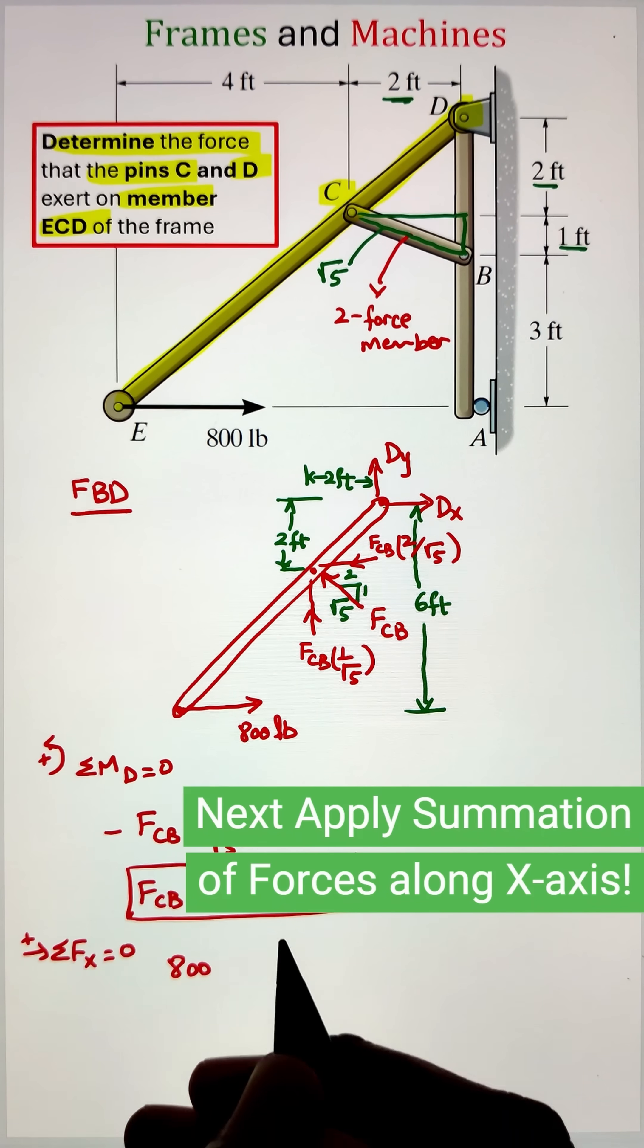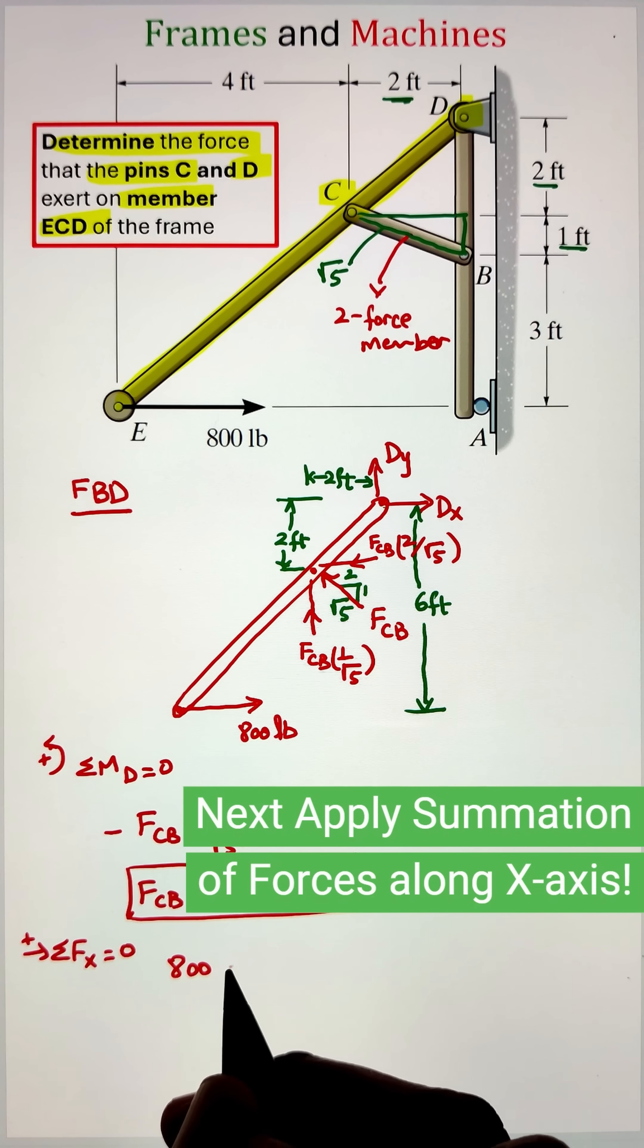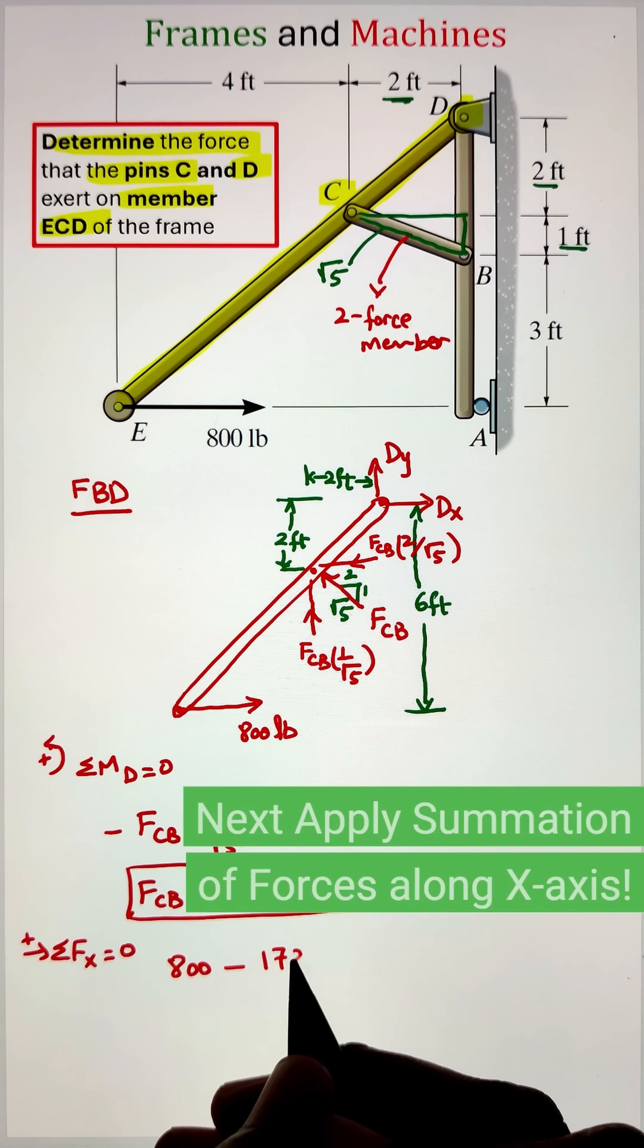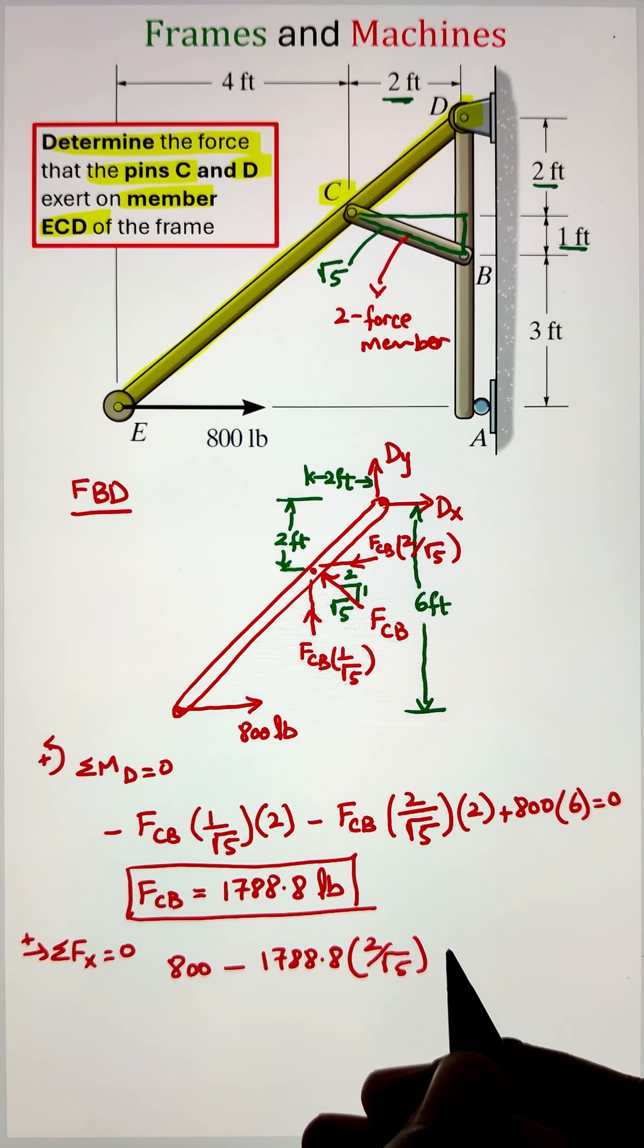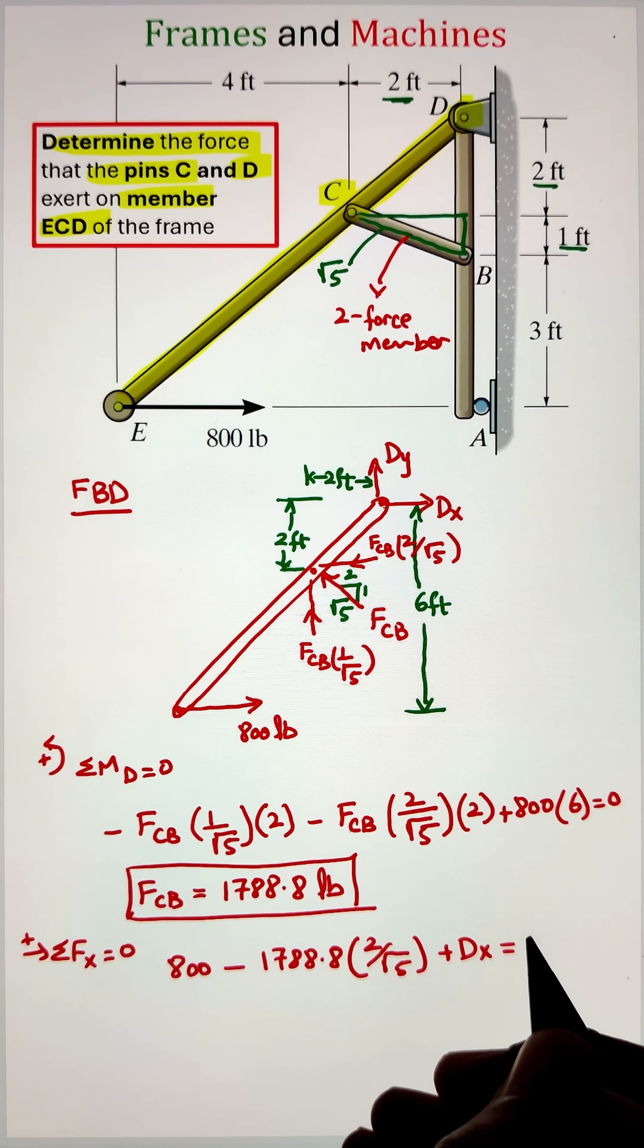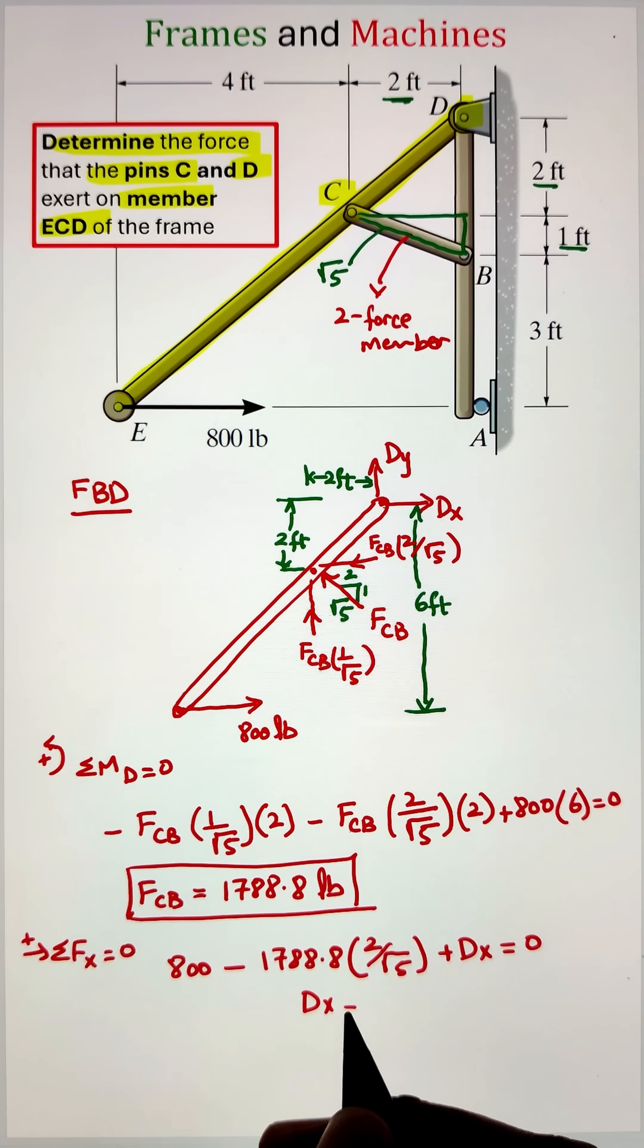Next, we can apply our summation of forces along the horizontal axis equals to zero and simplify to get our value of Dx, which is coming as 800 pounds.